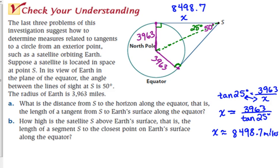Part B says, how high is the satellite S above Earth's surface? That is the length of a segment S to the closest point on the Earth's surface along the equator. So it's wanting this distance right here. From S to the closest point. I'm going to call it like point C. How can we find that length? Find the hypotenuse. Very good. Find the hypotenuse and subtract the radius.